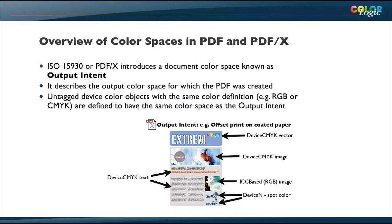In my example, where I have device CMYK vectors and device CMYK images, and the output intent is a CMYK output color space — such as offset print on coated paper, like ISO coated, FOGRA 39, or SWOP — those device CMYK colors in my document ought to be that output intent. I don't need to give additional information; they're assumed to be in that output intent. Whereas an ICC-based RGB should be converted to that output intent to be rendered correctly.